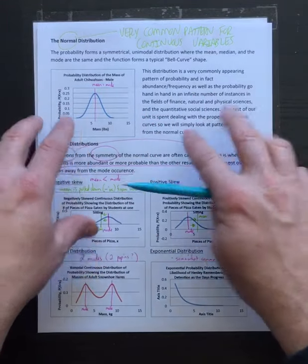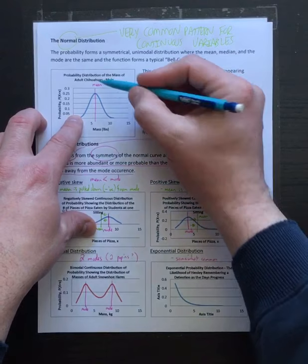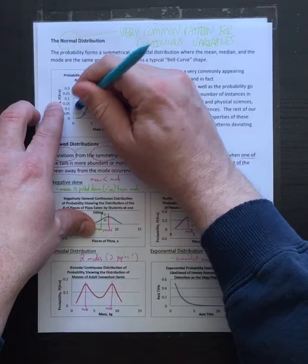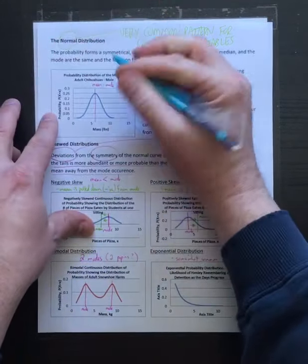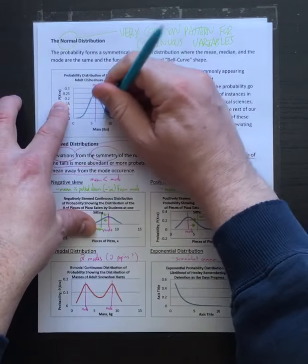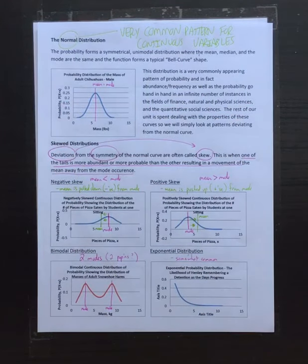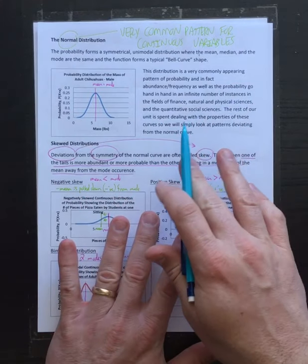Those of you who've done biology remember seeing these curves in evolution - convergent or divergent evolution. Characteristics in a population determined by multiple genes generally tend to form this distribution. It's really quite common, and as a result it's something we should be used to. The normal distribution has a lot of characteristics.